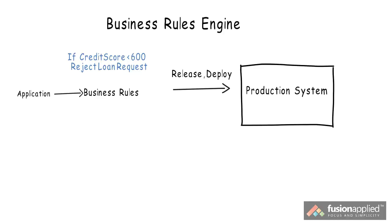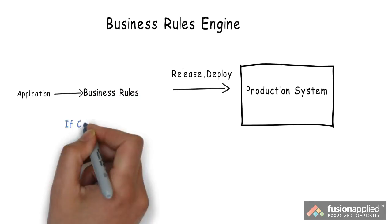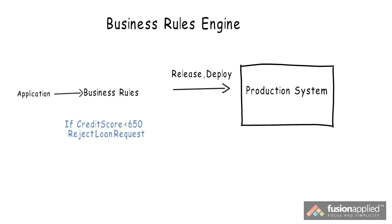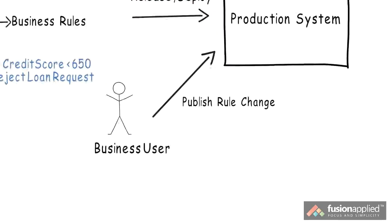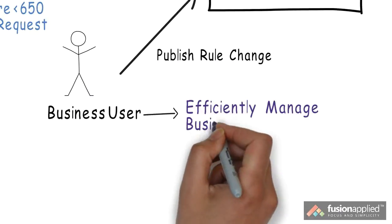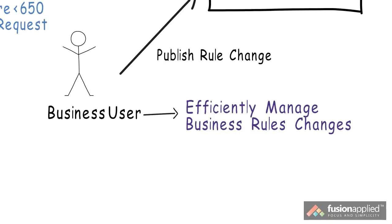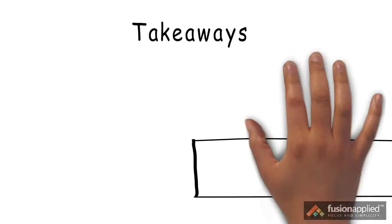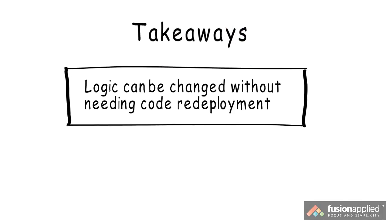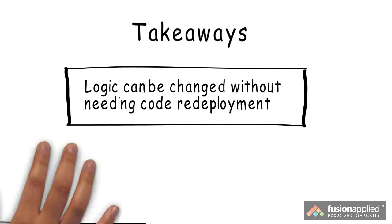Now let's say the rule changes because of some business factor. Instead of a developer having to make this change, a business user can make this change and publish it to the production system. Notice that there is no release or deploy of application code when the rules change. Business rules engines allow business users to efficiently manage rule changes. The two main takeaways are that logic can be changed without needing code redeployment, and business users or business analysts can tweak rules without assistance from developers.